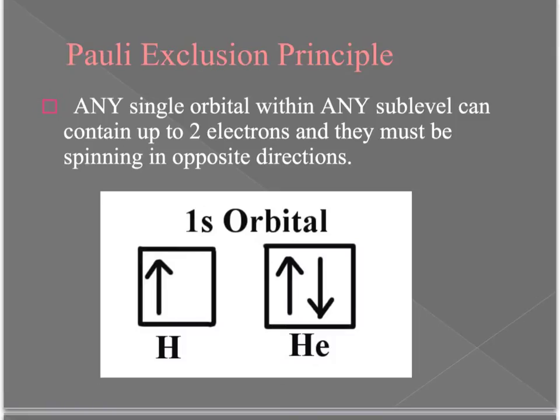The second rule is called the Pauli exclusion principle. This rule says that any single orbital within any sublevel can only contain up to two electrons, and those electrons have to be moving in opposite directions. The reason why electrons have to move in opposite directions has to do with minimizing the repelling force between two like charges. If they're moving opposite ways they're less likely to come into contact.